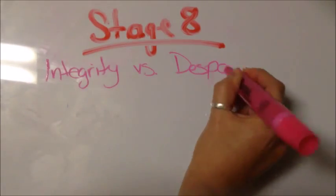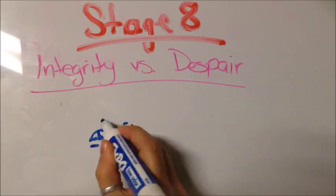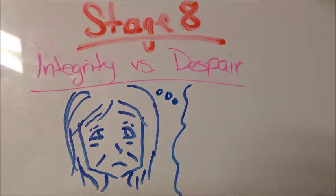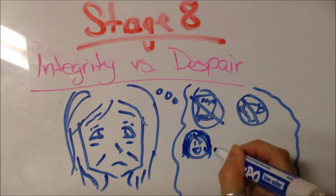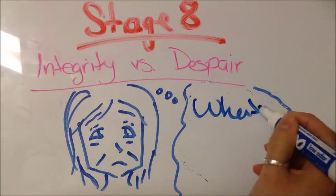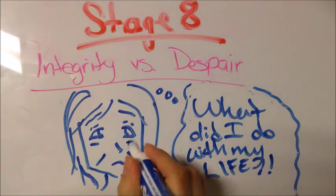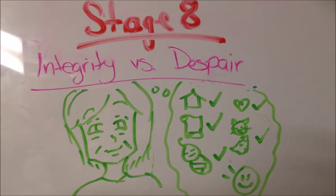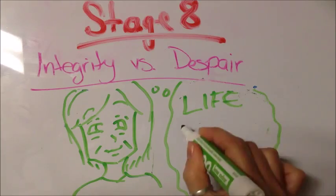Stage 8, Integrity versus Despair. The last stage of psychosocial development occurs as people reach retirement. They may develop despair if, when looking back on their life, they have realized that they had various unachieved goals and disappointments. Conversely, they may develop feelings of integrity if, when looking back, they believed to have lived a happy life.